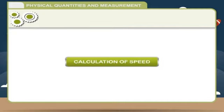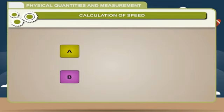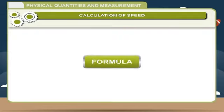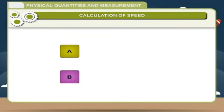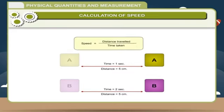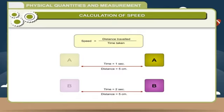Calculation of Speed: We sometimes want to know how fast something is moving. Object A has higher speed than object B. Speed is the measure of how fast an object moves. Different objects may take different amounts of time to cover a given distance. Speed is defined as the distance travelled by an object per unit time: Speed = Distance travelled ÷ Time taken.